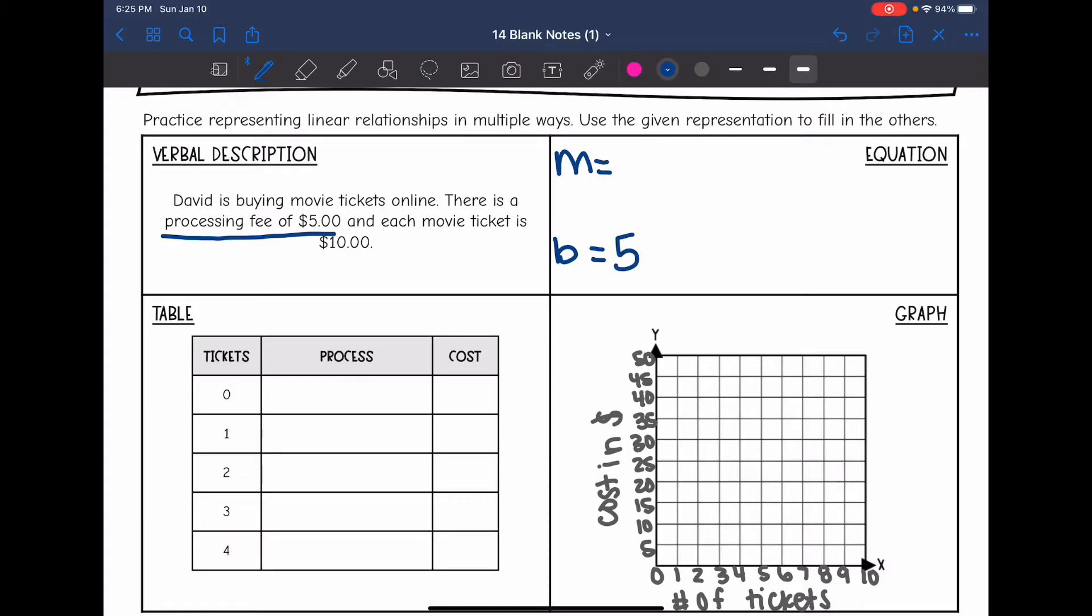It tells us there is a processing fee of $5. That means that is going to be our beginning point before they buy any tickets, they're going to have to pay the $5. And then each movie ticket, that means it's going to repeat so its slope is $10. So after they pay the $5, they will have to pay $10 for each movie ticket. That means our equation is y equals 10x plus 5.